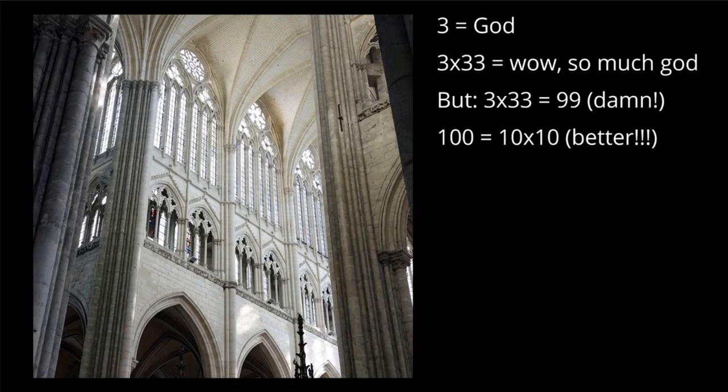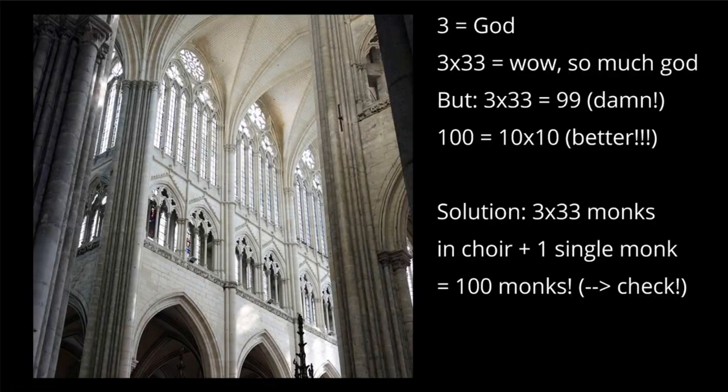But 100 is better — I think it's three plus three plus four or something, so 10 is a better number. They wanted 100 monks but also wanted to include the numbers three and 33 because they're symbols of God. The solution is a bit cute — they created three groups of 33 monks each singing, plus one single monk singing separately, reaching 100 monks altogether.